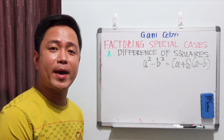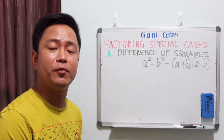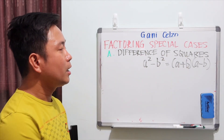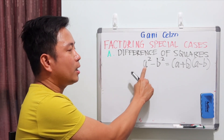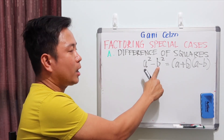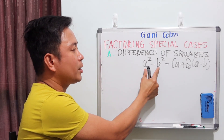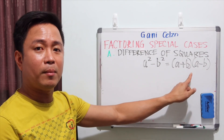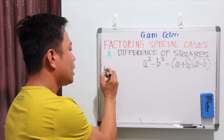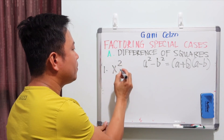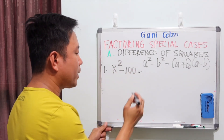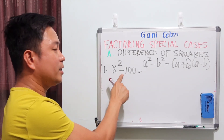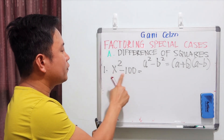The next type of factoring special case is called the difference of perfect squares. From the name itself — difference of squares — you need to have two terms: perfect square minus perfect square. If it is a difference of perfect squares, you can factor it as (a + b)(a - b). For example, if you have x² - 100, that is a difference of perfect squares: a minus sign with both terms being perfect squares.